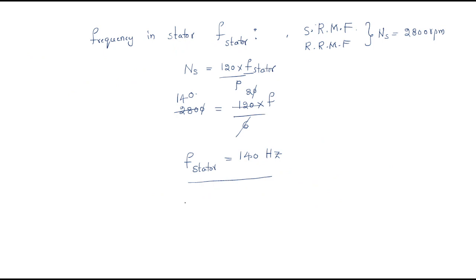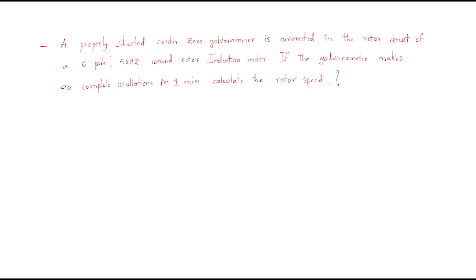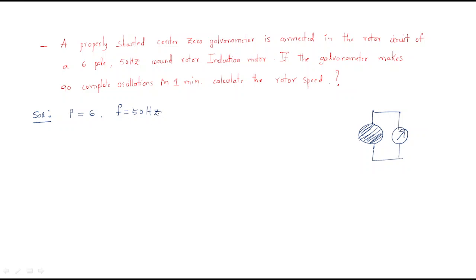Next problem: a properly shunted center-zero galvanometer is connected in the rotor circuit of a six-pole 50 Hz wound rotor induction motor. The galvanometer makes 90 complete oscillations per one minute. We need to calculate the rotor speed.